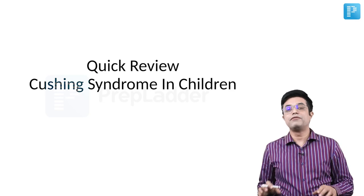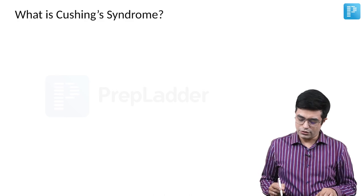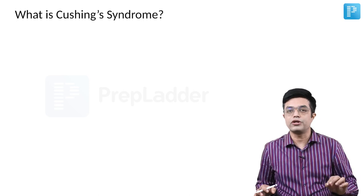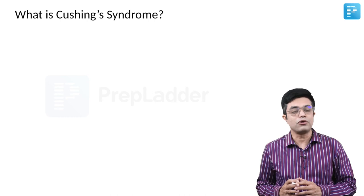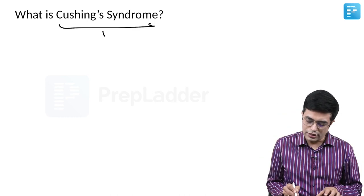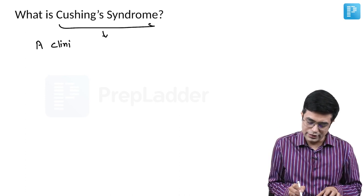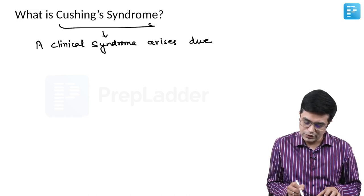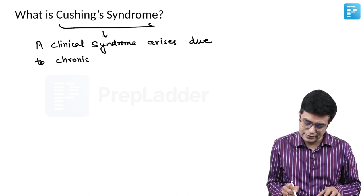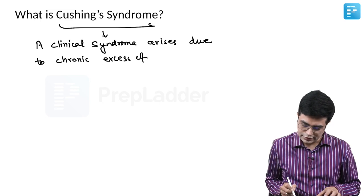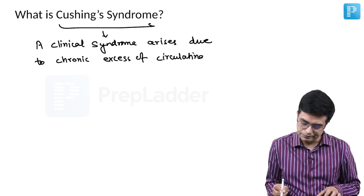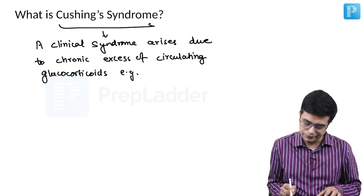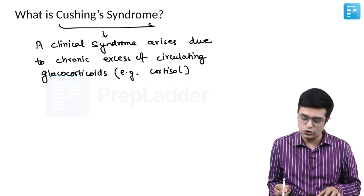Hello everyone, welcome to a quick review of Cushing syndrome in children. Cushing syndrome refers to a clinical state or clinical syndrome which arises due to chronic excess of circulating glucocorticoids, for example cortisol.